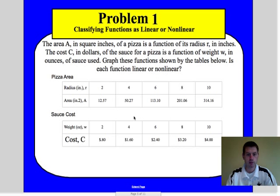They gave us the table here. Two inches has an area of 12.57, four inches 50.27, and so forth. You have that data in your notes. The sauce is two ounces is 80 cents, four ounces is going to cost $1.60, and so forth.